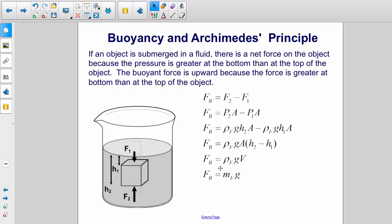But rho times V is just the mass of the fluid. So the buoyant force is the mass of the fluid displaced by the object multiplied by g.